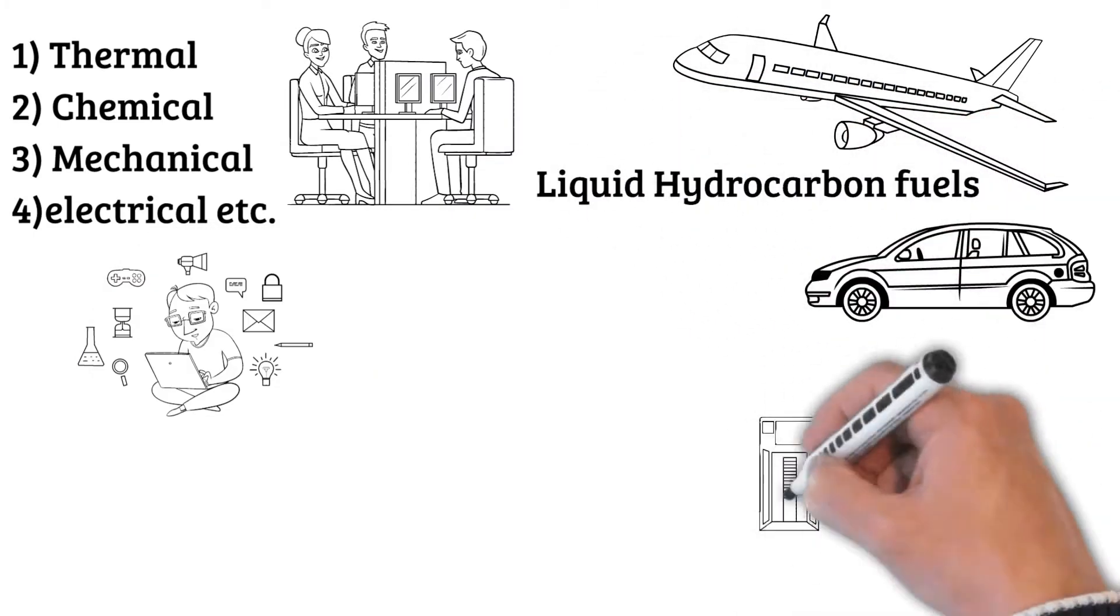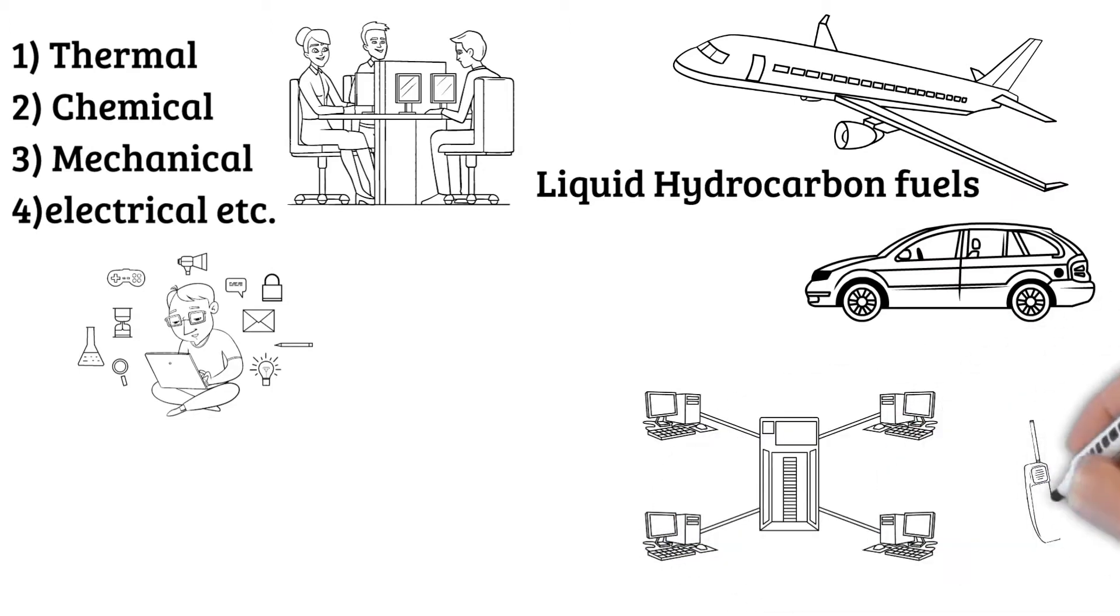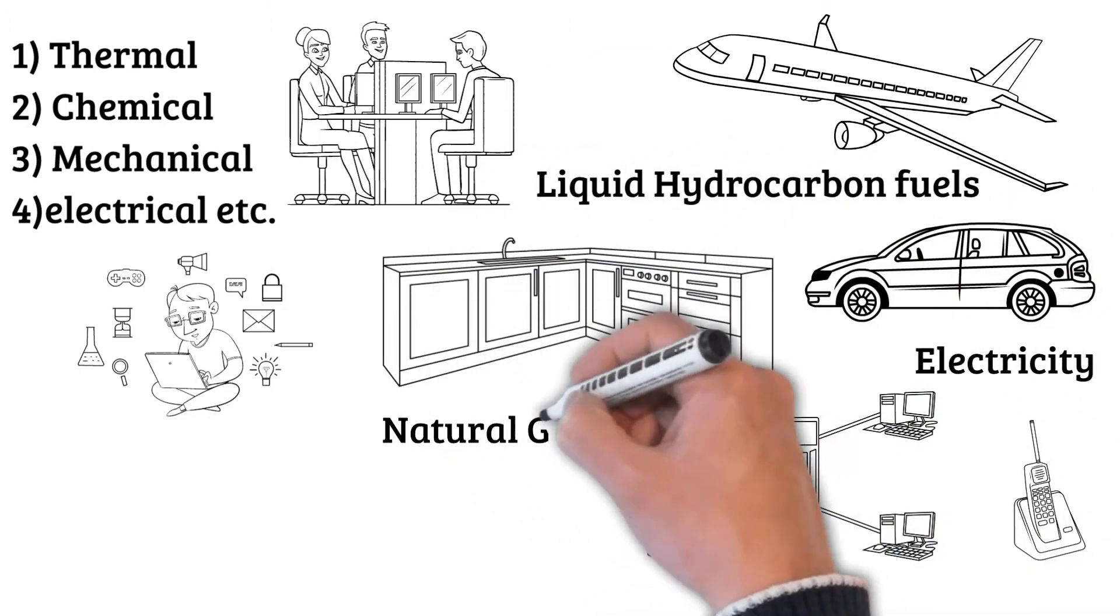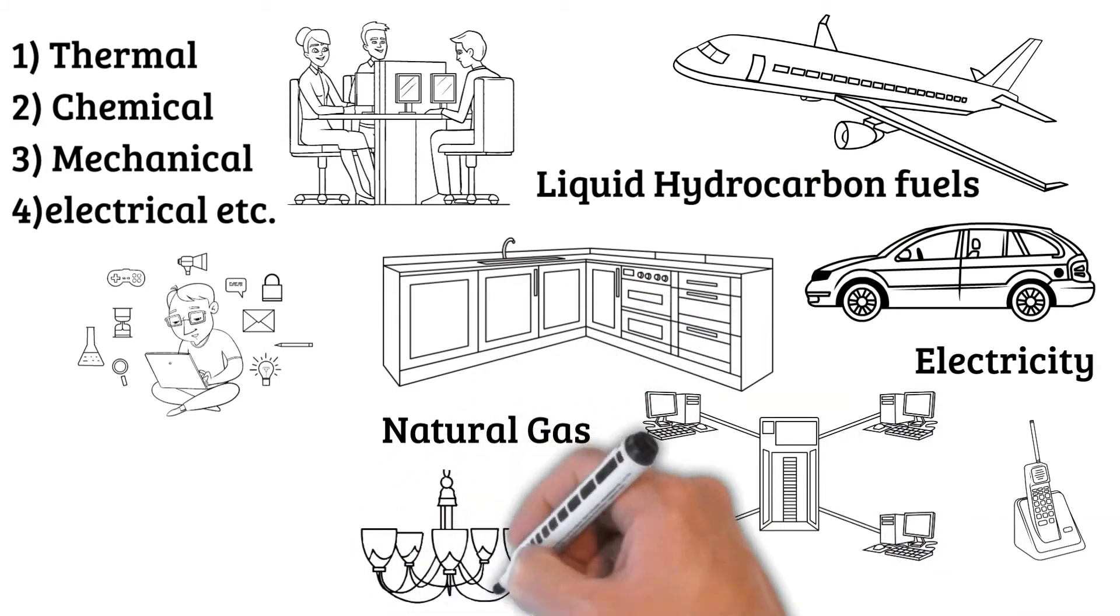Airplanes and automobiles use liquid hydrocarbon fuels, computers and wireless networks use electricity. Contemporary households use natural gas for cooking and heating, and electricity for lighting and entertainment.